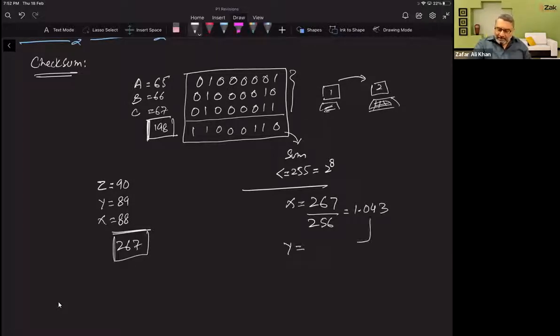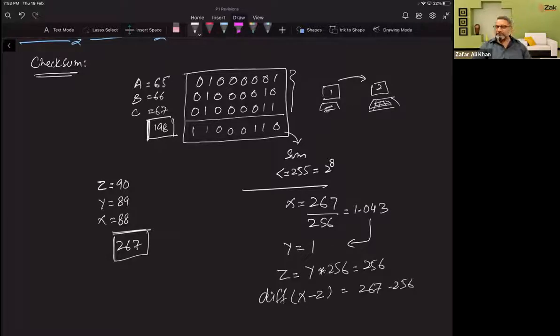We will round that down to the nearest number, round down. So this has become 1.043, now we will round down and assign to y which is 1. Okay. Now we will make z which is y into 256. Z is y into 256. Okay. Now we have to find the difference: x minus z. X is what? 267. Z is what? 256. 267 minus 256, that is 11. Now this 11 is the checksum.